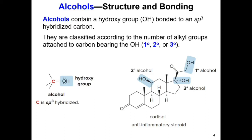Here's an example: cortisol, which is an anti-inflammatory steroid containing three different types of alcohols — a primary, secondary, and tertiary alcohol. The primary alcohol has its hydroxy group bonded to a primary carbon, the secondary alcohol to a secondary carbon, and the tertiary alcohol to a tertiary carbon.